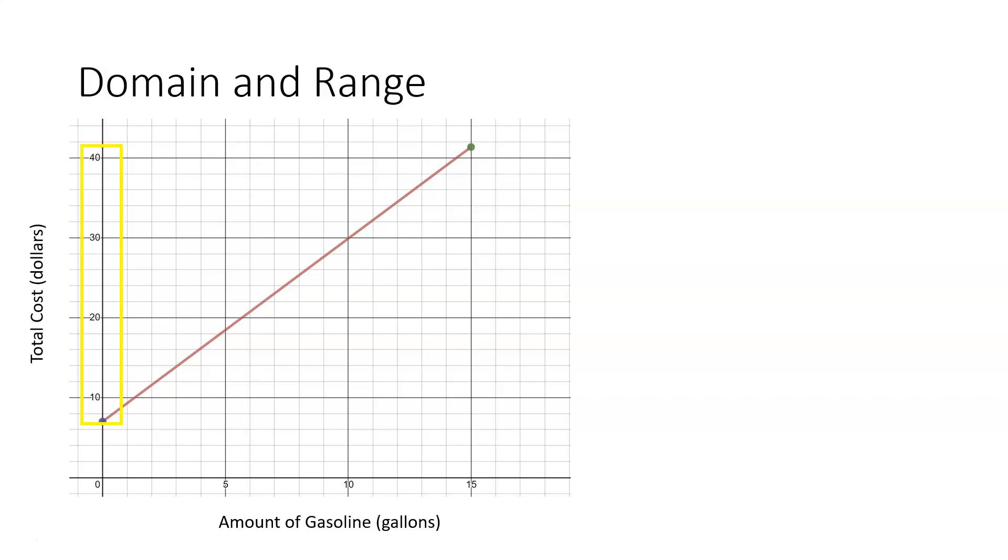And if you look at our graph, we can kind of figure out what the lower value of our range is, and that's going to be 7 because that's the amount in tip that we would be giving the parking or the gas station attendant. So that's going to be the lower value of our range.